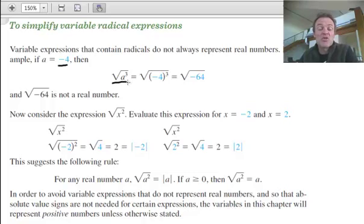What's the square root of a cubed? If I put negative 4 into this where a is, and I cube it, I'm going to get negative 64, and I can't square root negative 64.